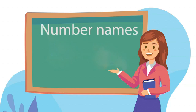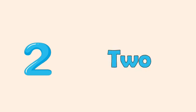So here comes the first number. One. One, and its name is O-N-E. O-N-E, 1. The next number is 2. 2 is T-W-O. T-W-O, 2.